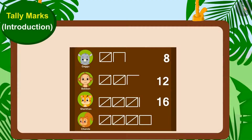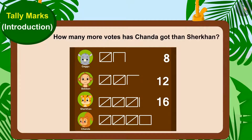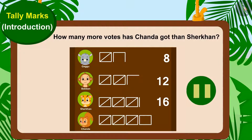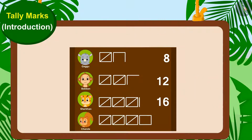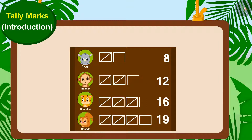Now, can you tell how many more votes Chanda has got than Shere Khan? If you wish to, you may stop the video and find the answer. Yes, Chanda has received 19 votes and Shere Khan has got 16 votes. This means Chanda got three more votes than Shere Khan.